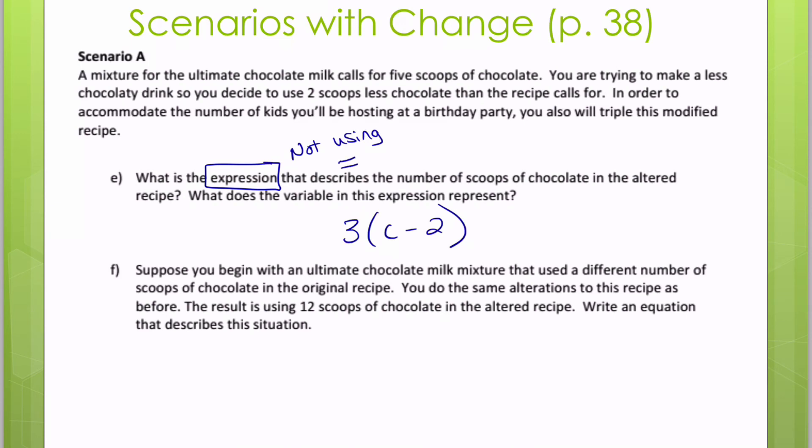Then it says, suppose you begin with the ultimate chocolate mixture that used a different number of scoops of chocolate in the original recipe. You do the same alterations, the result is 12 scoops of chocolate. So now I want to use my same alterations, but I'm going to end up with 12 scoops of chocolate. That's how I would write an equation that describes that situation.